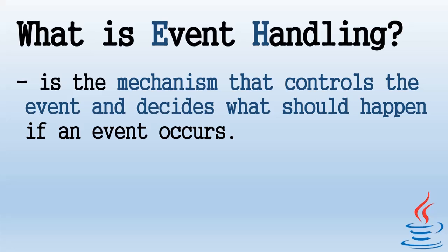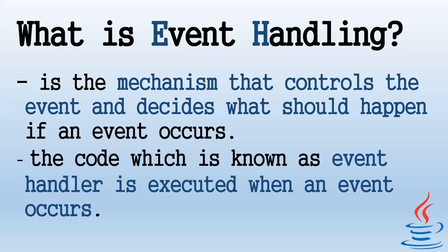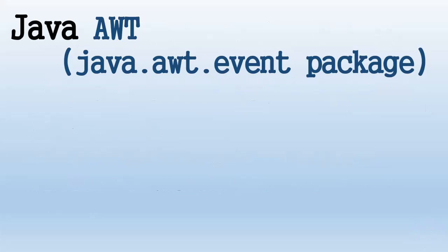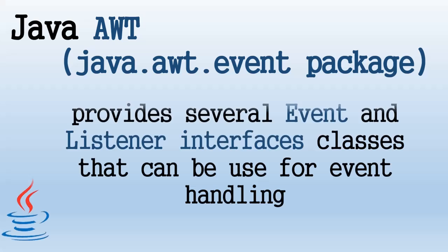Now let's determine what event handling is. Event handling is a mechanism that controls the event and decides what should happen if an event occurs. The code which is known as an event handler is executed when an event occurs. There are Java packages that provide numerous interfaces and classes which deal with different types of events, one of these being the Abstract Window Toolkit event package.